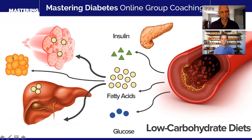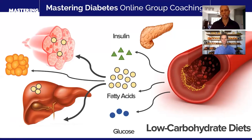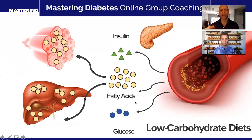If fatty acids ended up going directly into your adipose tissue and only your adipose tissue, then prediabetes and type 2 diabetes would not exist. But the problem is that over time, as you continue to eat a low-carbohydrate diet, this accumulated fatty acid buildup ends up depositing fatty acids inside of your liver and inside of your muscle.